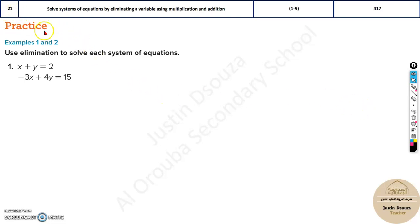So now, we will solve 21, 22, 23, all in writing. They have asked you to solve system of equations by elimination, eliminating a variable by multiplication and addition.